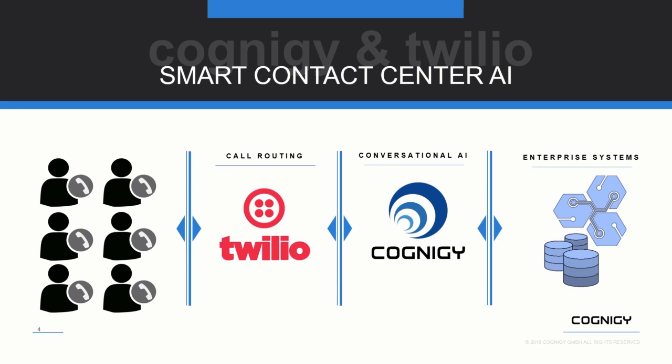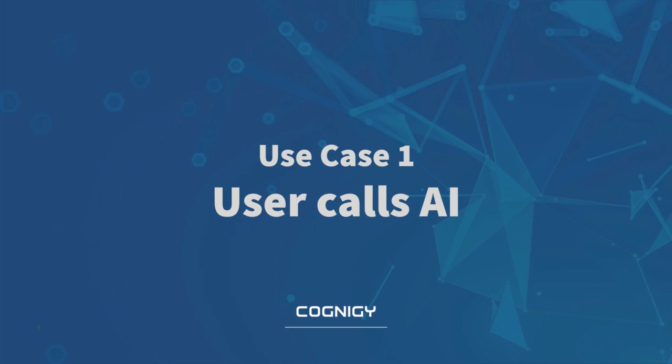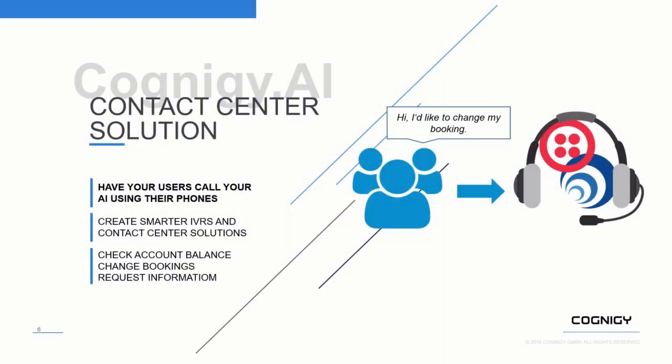Let's look at two examples. The first is that the user calls the AI — for example to change a booking, which we're going to see in the demo in a couple of minutes. You could create smarter IVRs or any kind of contact center solutions. Customers could check account balances, change bookings, or request information.